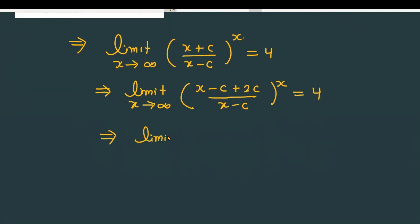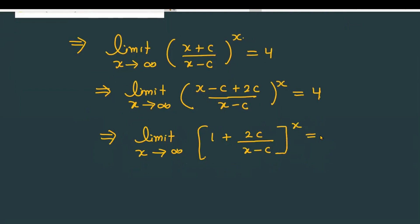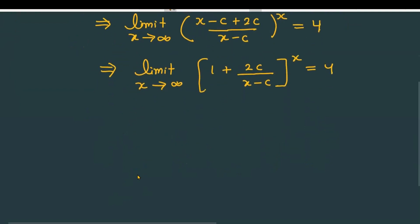So, x approaching to infinity, this becomes 1 plus 2c over (x minus c), total raised to the power x, and this is equal to 4. Now, before moving further, let me clarify the concept we are going to use.